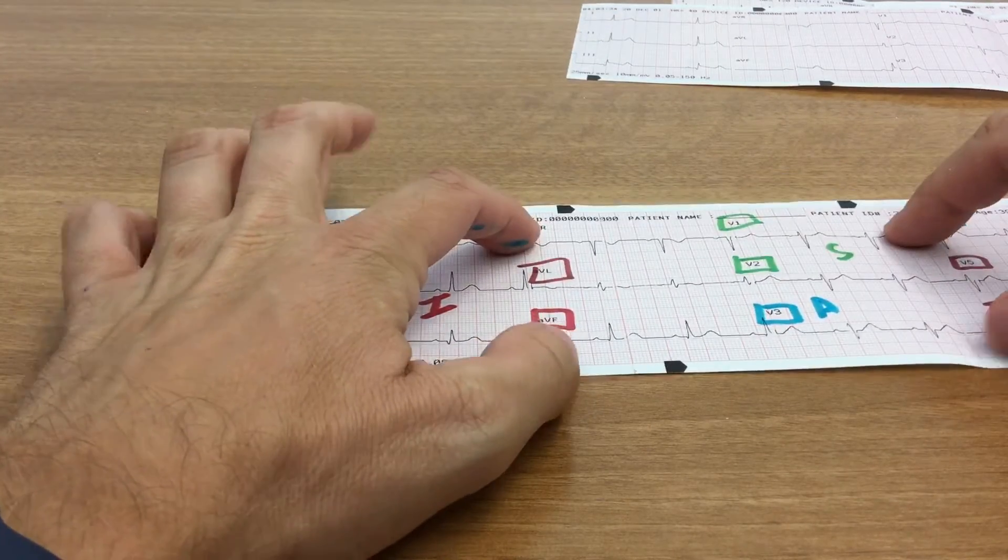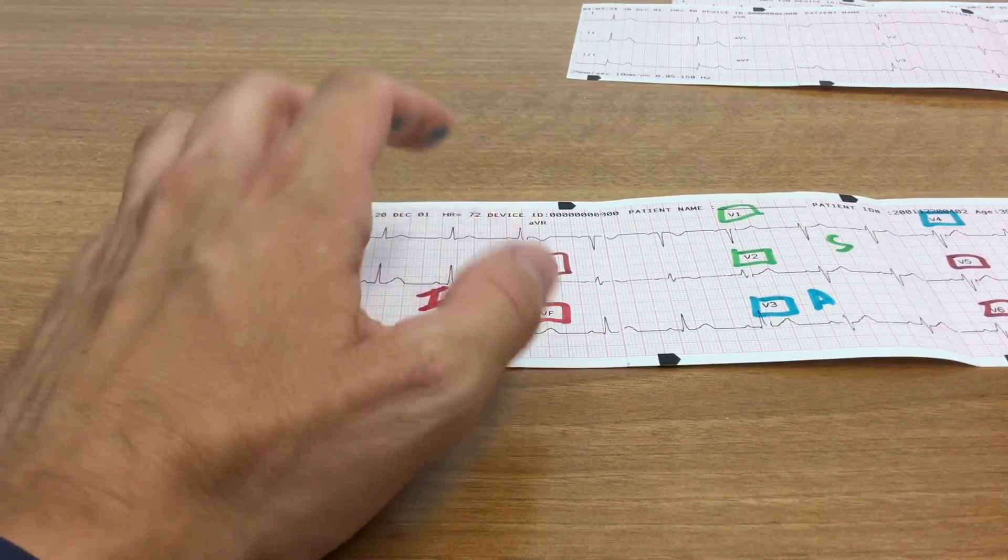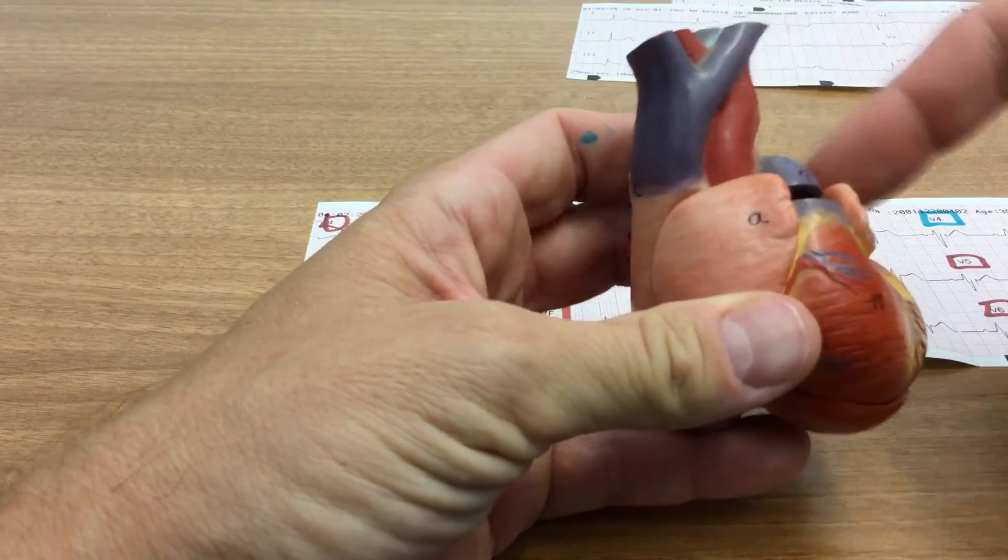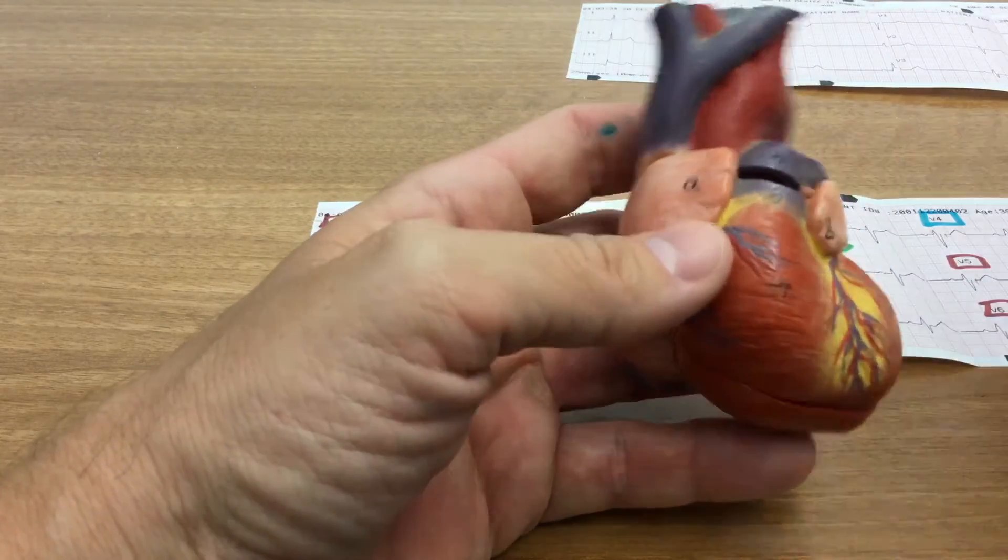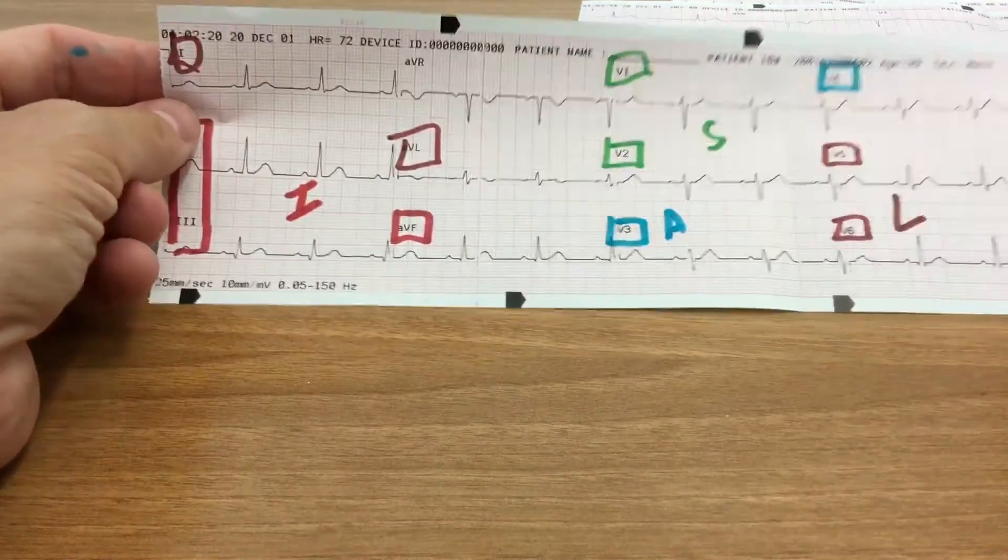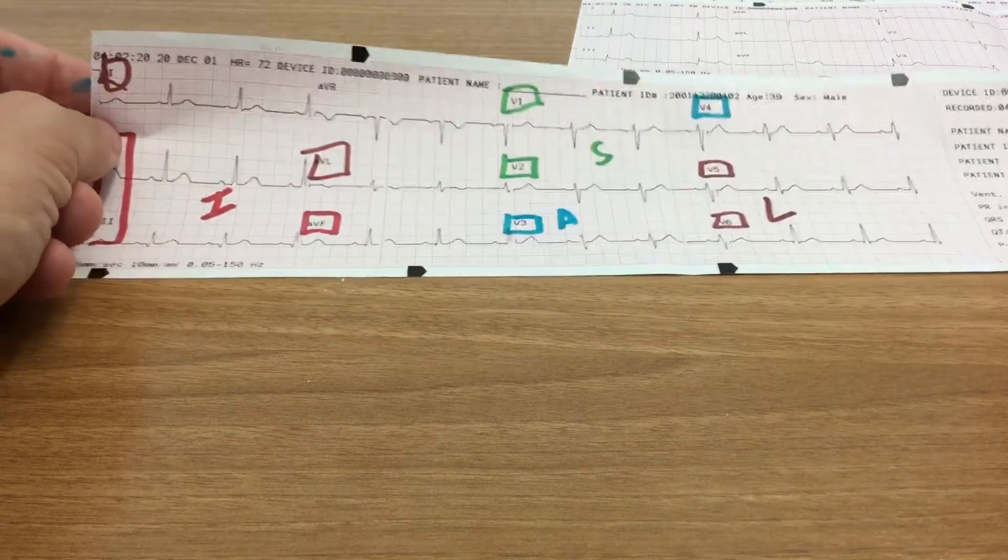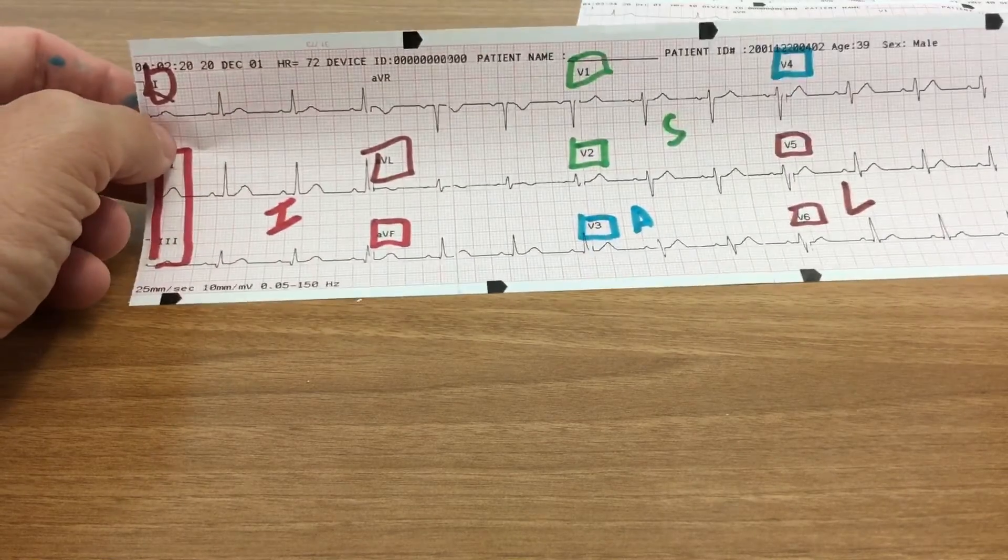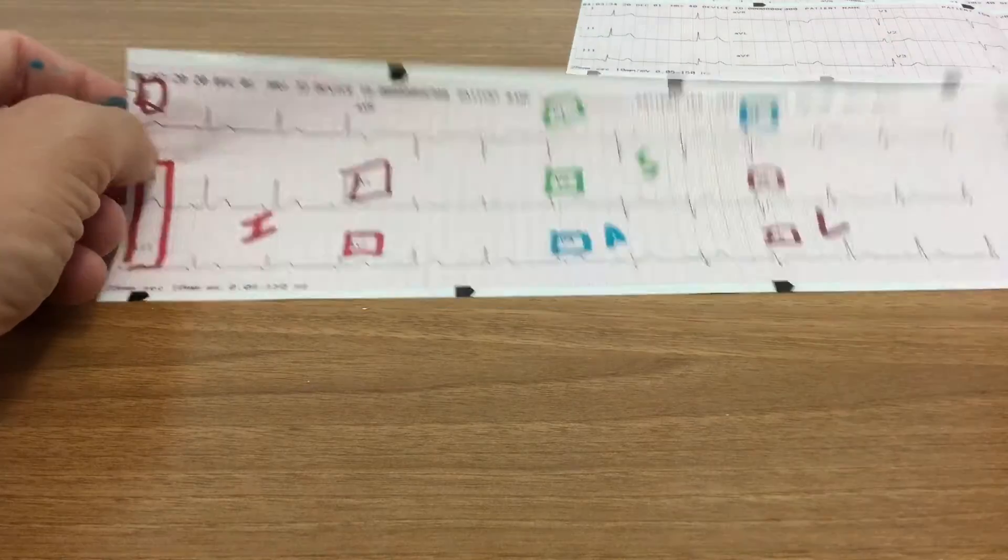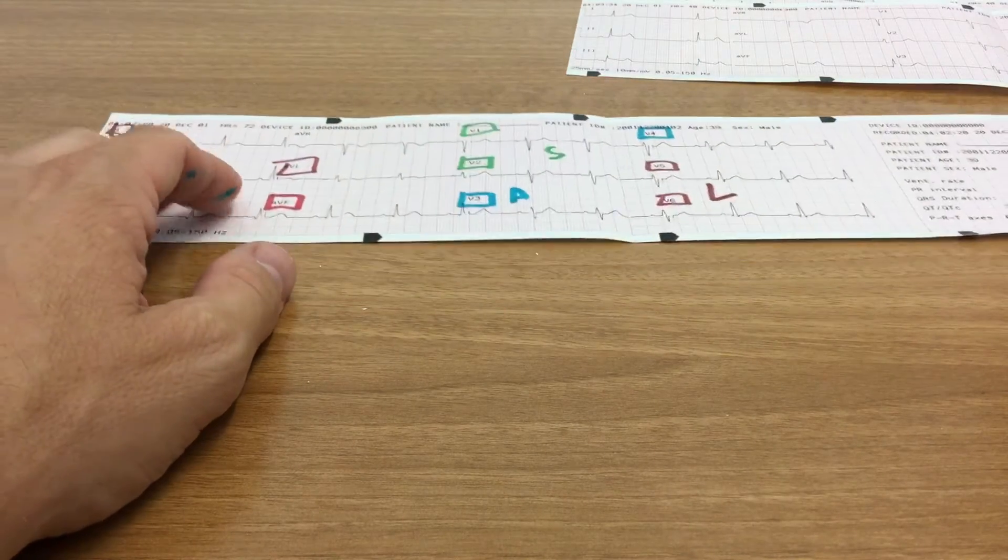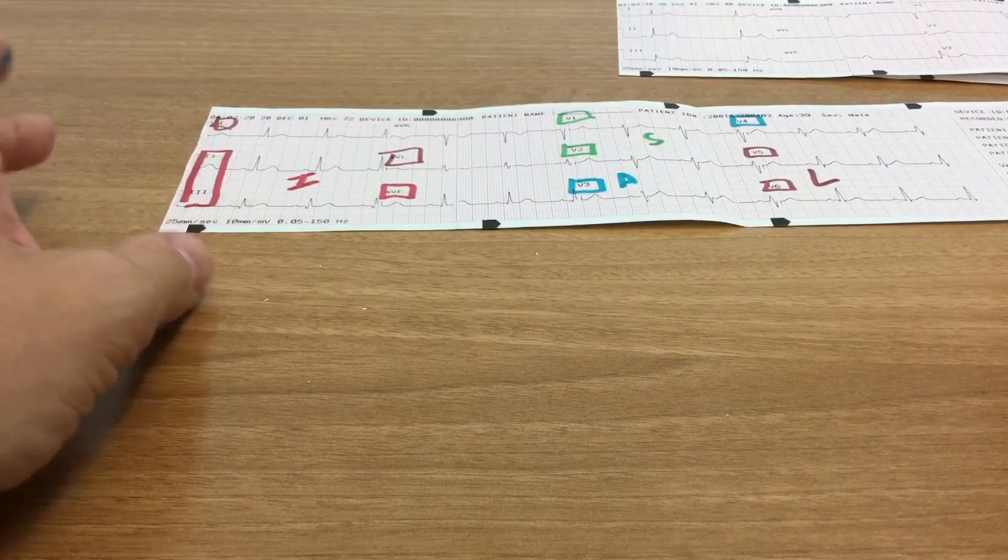And then AVR up here, augmented vector right, really doesn't look at anything. Remember, it kind of looks in this area, so kind of more through the aorta and that. And so we don't typically use it to localize changes to coronary artery perfusion changes to the heart. It has some other diagnostic implications, but not typically for localizing ST segment problems.